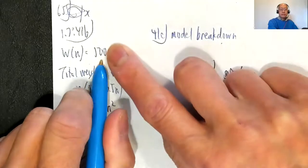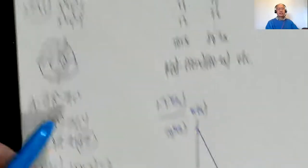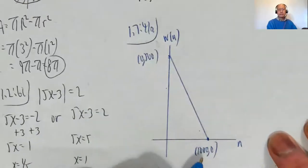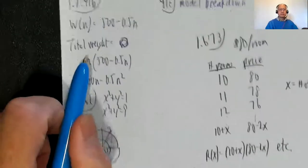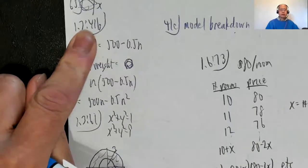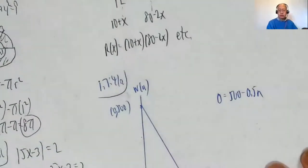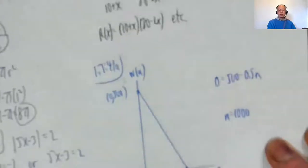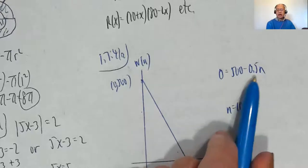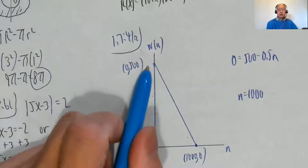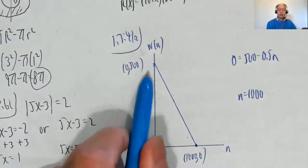So a very crude sketch: the formula is W(N) = 500 − 0.5N, slope is negative 0.5, and the W-intercept is 500. To find where the graph hits the N-axis, I set W equal to 0: 0 = 500 − 0.5N, so N = 1000. So the graph passes through (0, 500) and (1000, 0) — it's a negative slope coming straight down. This graph is not to scale.